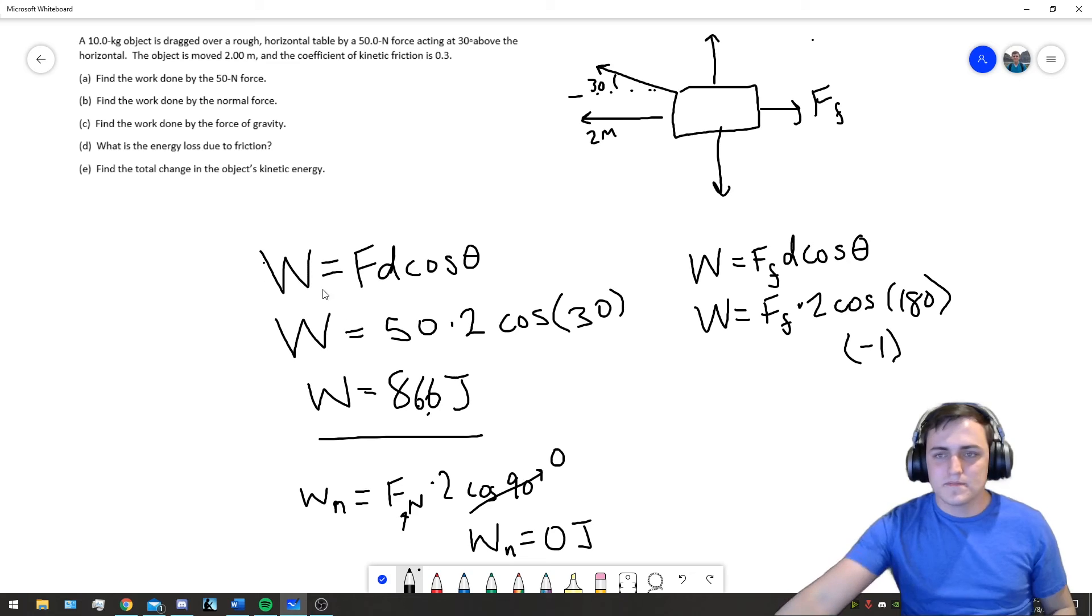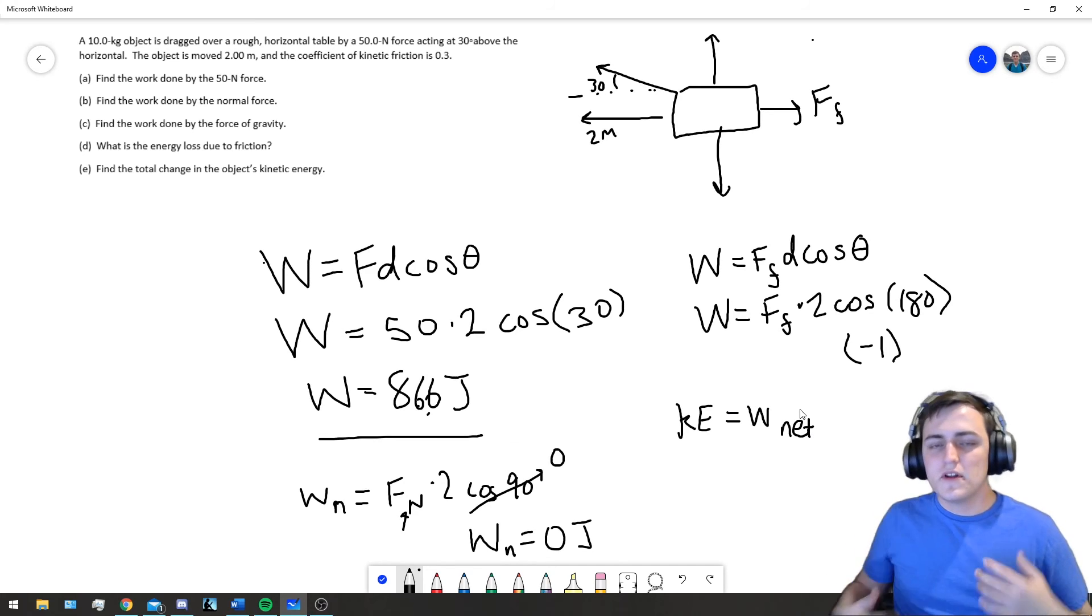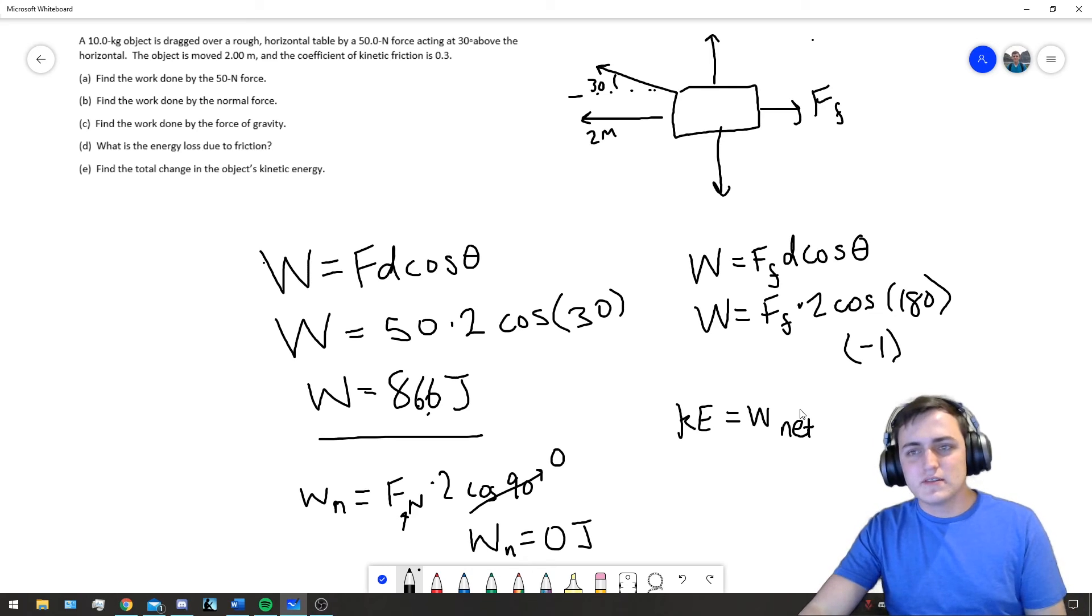find the total change in the object's kinetic energy. We know that our kinetic energy is equal to the network. We know that our energy we put into the object has to go into kinetic energy.